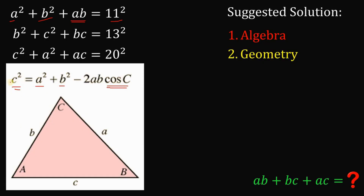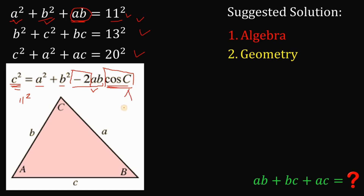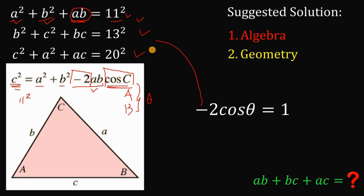The cosine law states that C squared equals A squared plus B squared minus 2AB times the cosine of angle C. Now, if we let C equal 11, we get 11 squared on one side, A squared plus B squared on the other, and an extra AB term — which is exactly what we want. Using this cosine law, the factor negative 2 times cosine of theta must equal 1. So negative 2 times cosine of theta equals 1, meaning cosine of theta equals negative one-half, and therefore theta equals arc cosine of negative one-half, which is 120 degrees.